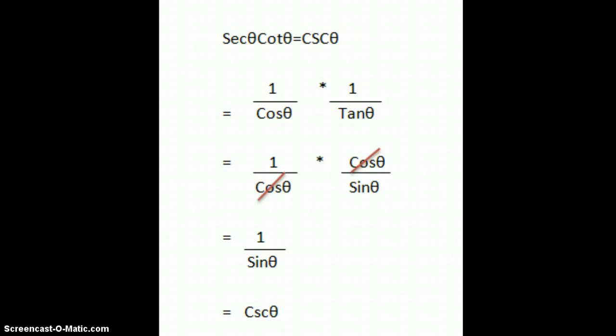You can look at it as cotangent theta, which by its quotient identity is cosine theta over sine theta. Or you can look at it as 1 over sine theta over cosine theta, which of course you just flip into cosine theta over sine theta. Either way, when you multiply, your cosine thetas are going to cancel, and you're going to end up with 1 over sine theta, which is cosecant theta.